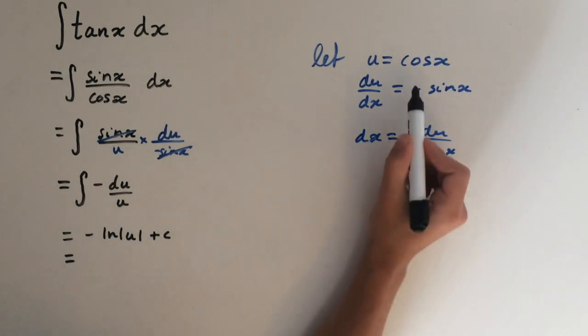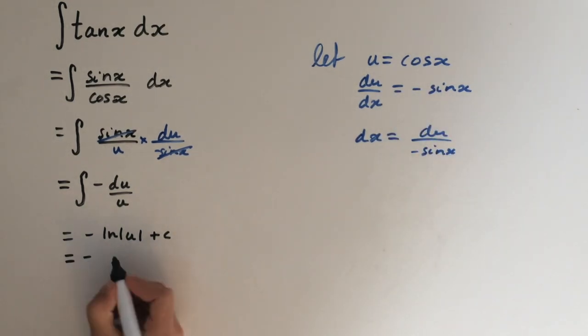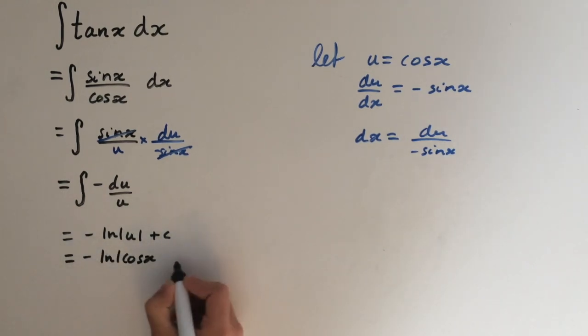So let's substitute u back in, which is cos(x). So this gives us minus ln(cos(x)) plus c.